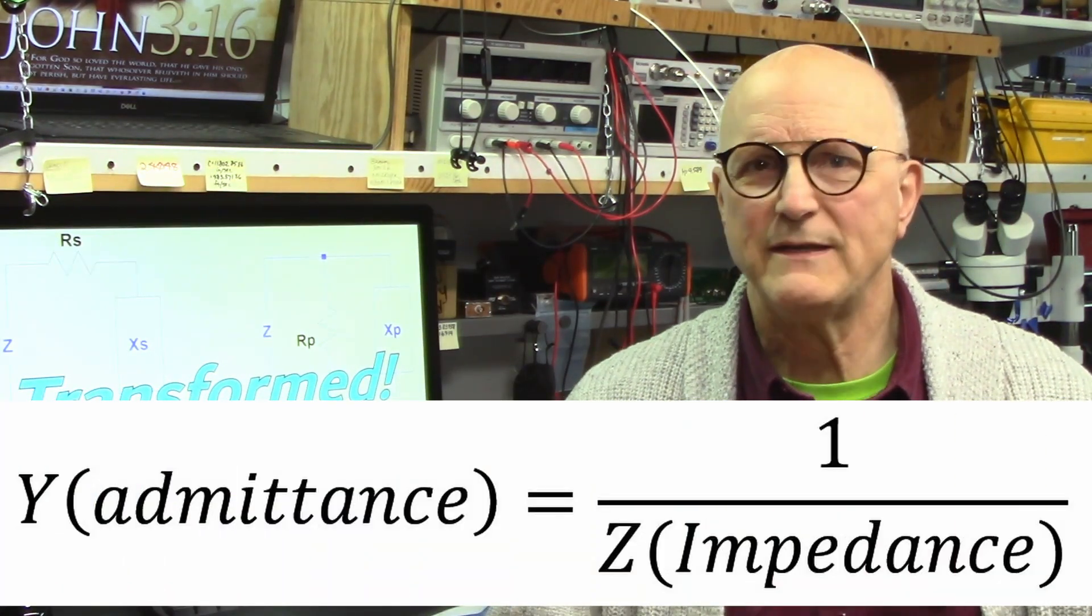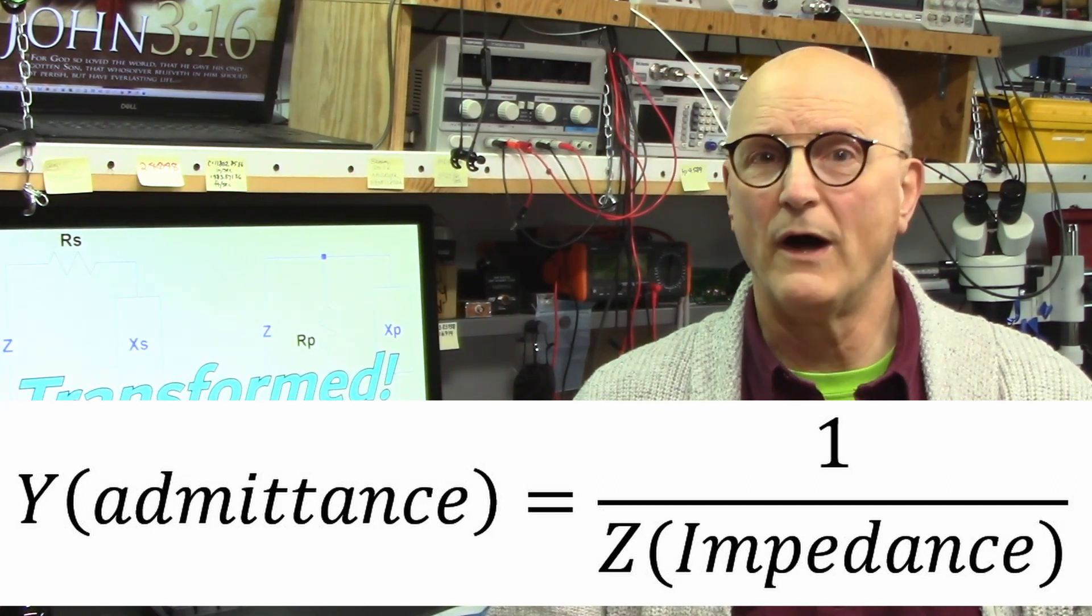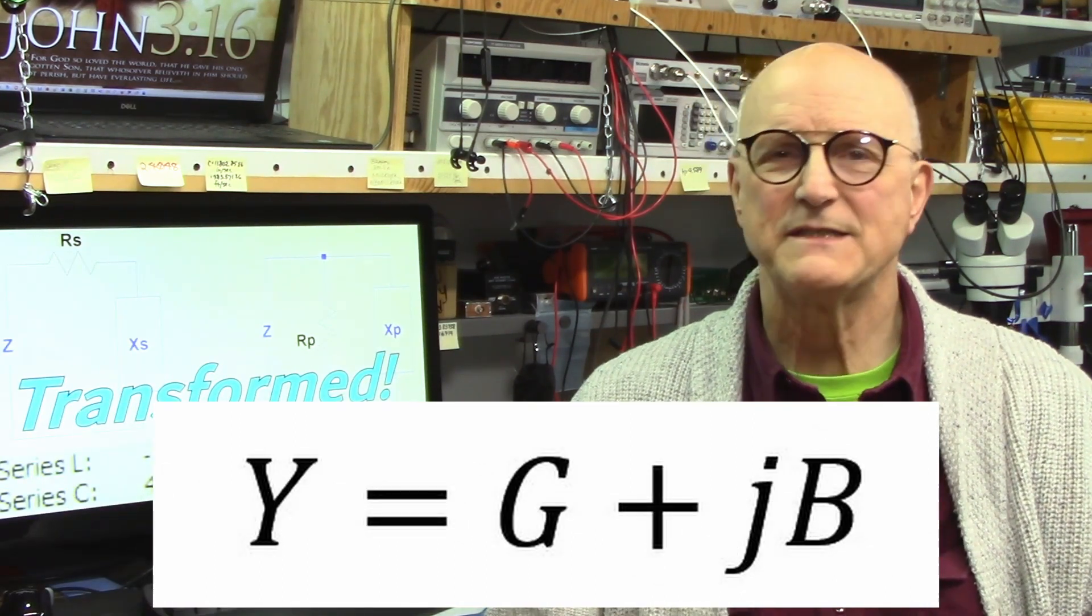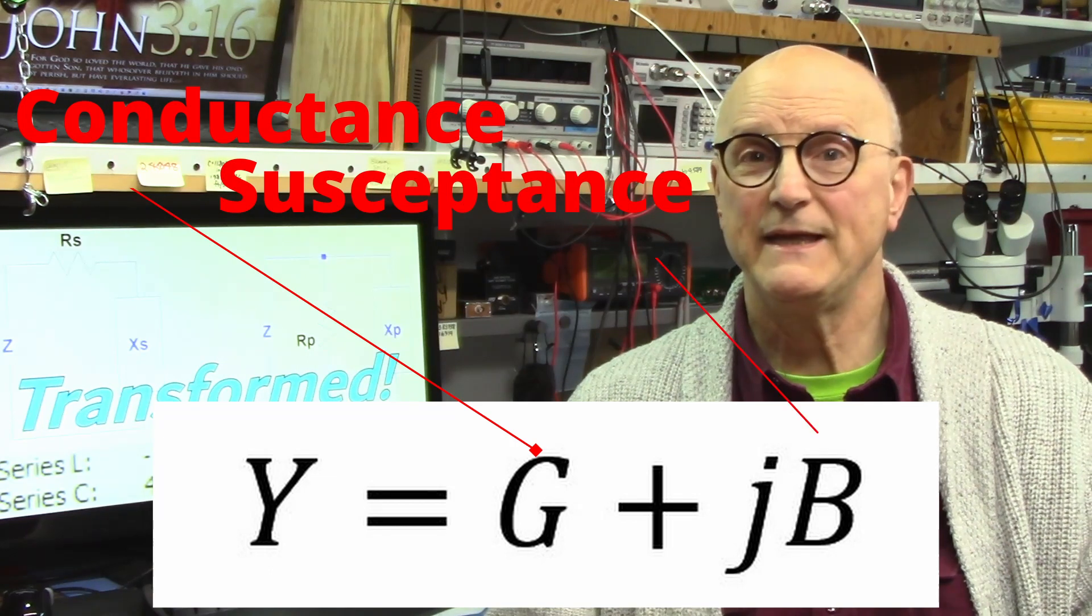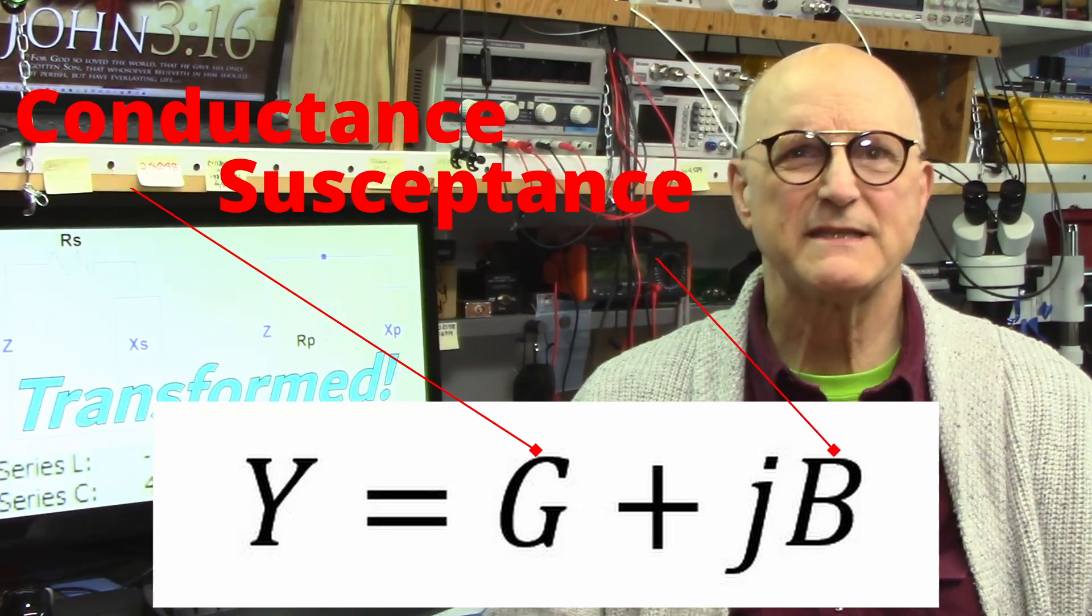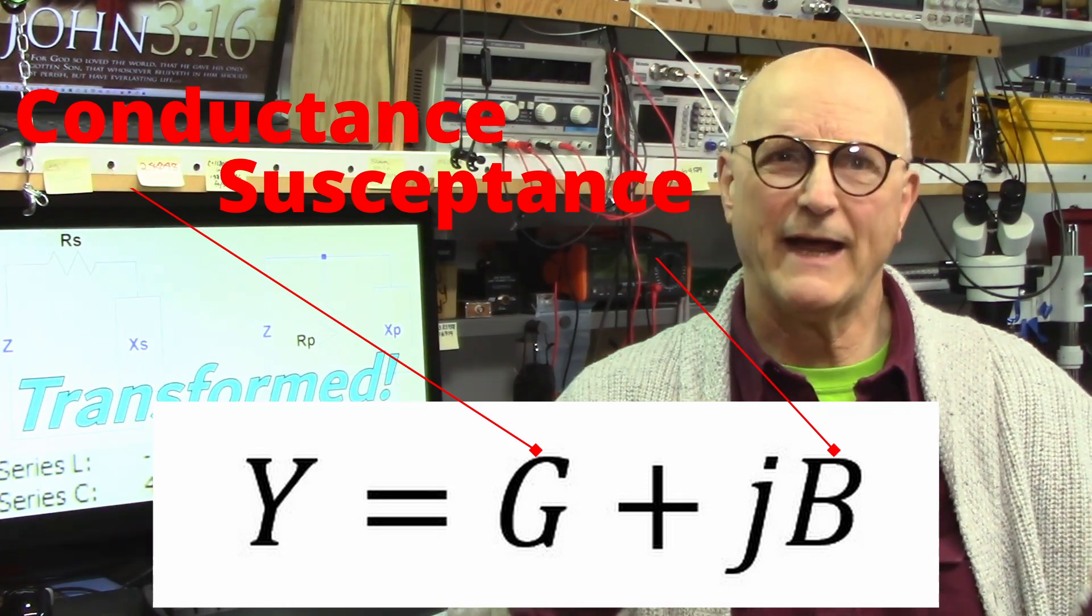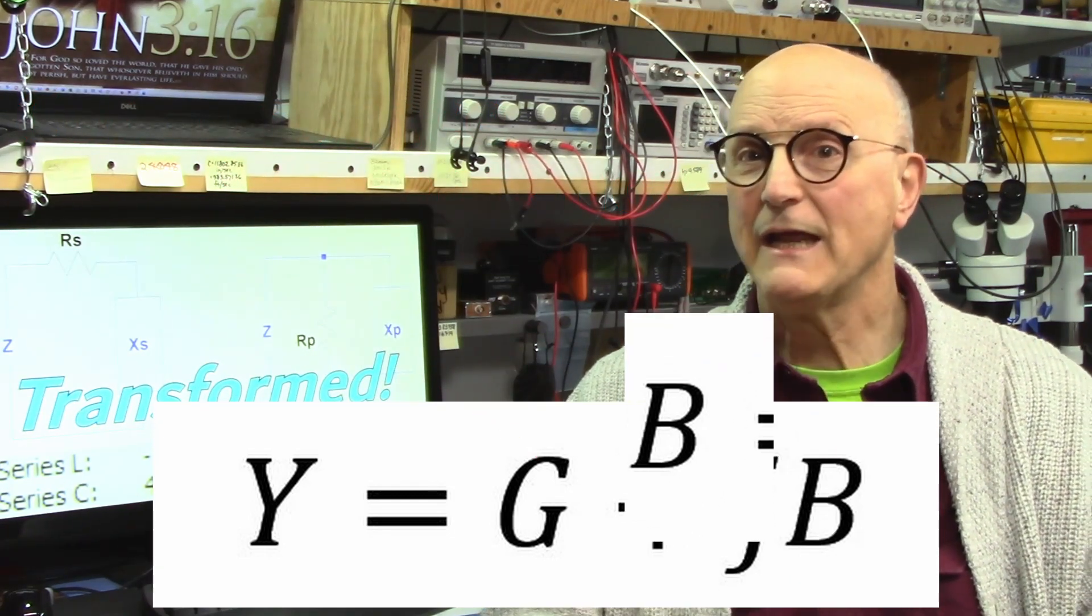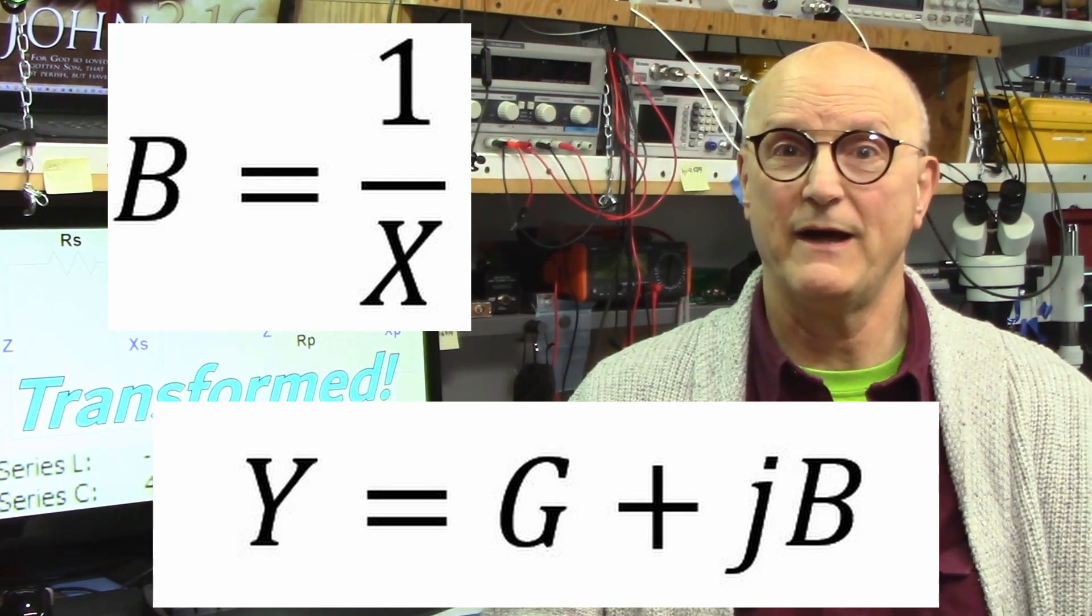The same process is true when we are talking about impedance. In the AC world we talk about admittance, which is represented by the letter Y. It is found by dividing 1 by the impedance. The admittance is expressed in the form of Y is equal to G plus jB. Where G is the conductance and B is the susceptance. Susceptance is the AC equivalent to conductance in a similar fashion that reactance is the AC equivalent to resistance. It is represented by the letter B and can be found by dividing 1 by the reactance.